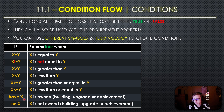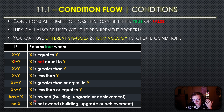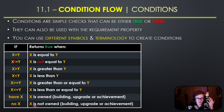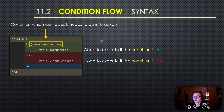For condition terminology unique to idle game maker, there is the 'have x' condition which returns true if x is owned - x would need to be something ownable, such as a building, an upgrade, or an achievement. The 'no x' condition works exactly the same way except the result is inverted, so it returns true when x is not owned.